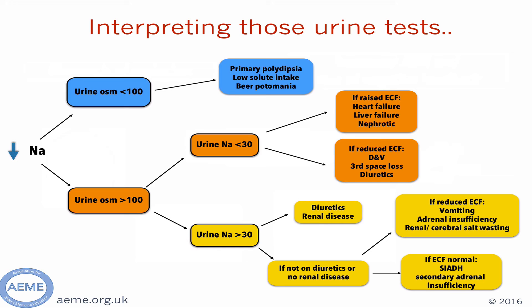If the amount of sodium in the urine is higher, this can be caused by diuretics or renal disease. If the patient is not on diuretics or does not have significant renal disease, they may be experiencing a salt-wasting disorder, or an endocrine disorder such as Addison's, in which case the patient's fluid status may be low. If the patient is euvolemic with a higher level of sodium in their urine, this may be representative of SIADH, or a secondary adrenal insufficiency, such as reduced ACTH production.